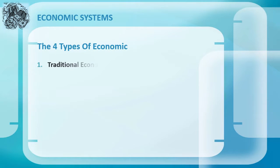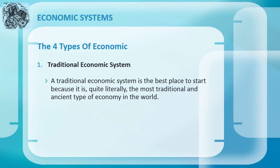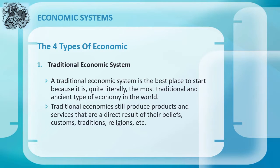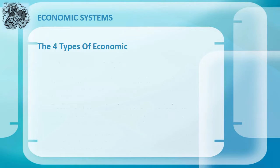Traditional economic system: a traditional economic system is the most traditional and ancient type of economy in the world. Traditional economies still produce products and services that are a direct result of their beliefs, customs, traditions, religions, etc. Vast portions of the world still function under a traditional system — these areas tend to be rural, second or third world, and closely tied to the land, usually through farming. Traditional economies would never see the type of profit or surplus that results from a market or mixed economy. Surplus is rare; third world or indigenous countries often lack the necessary resources, or if they do have them, they are controlled by wealthier economies, often by force. Any surplus is typically distributed, wasted, or paid to some authority that has been given power.